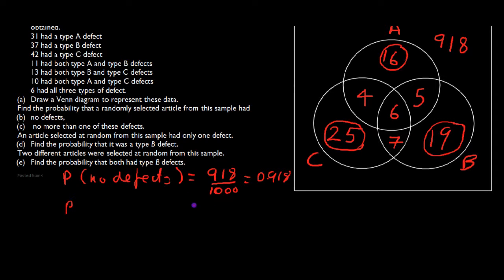So probability of no more than one defect. Let's just check that. 10, 5 is 15, plus another 7 gives me 22. Actually it's 978, isn't it? So 978 out of 1000, which gives us 0.978.